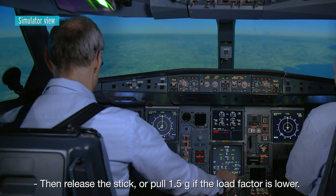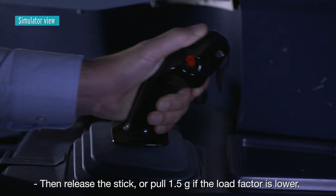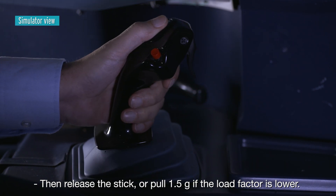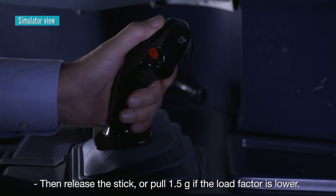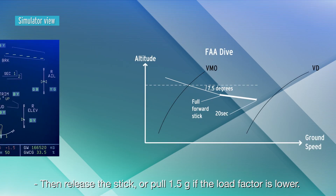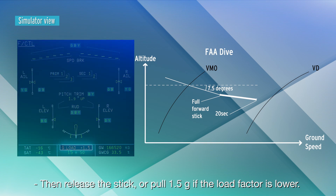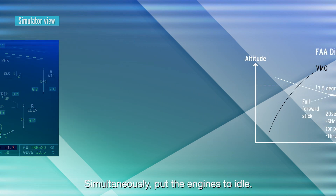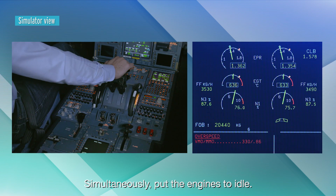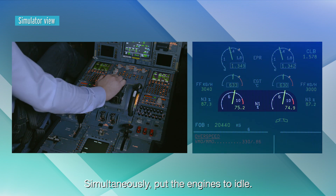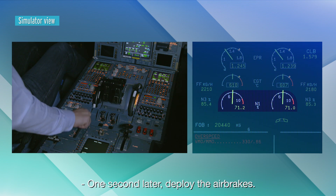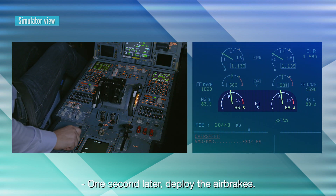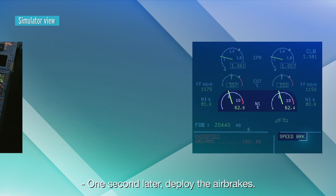Then the stick is released, or a 1.5 G pull is applied if the load factor is lower. Simultaneously, the engines are put to idle. One second later, the airbrakes are deployed.